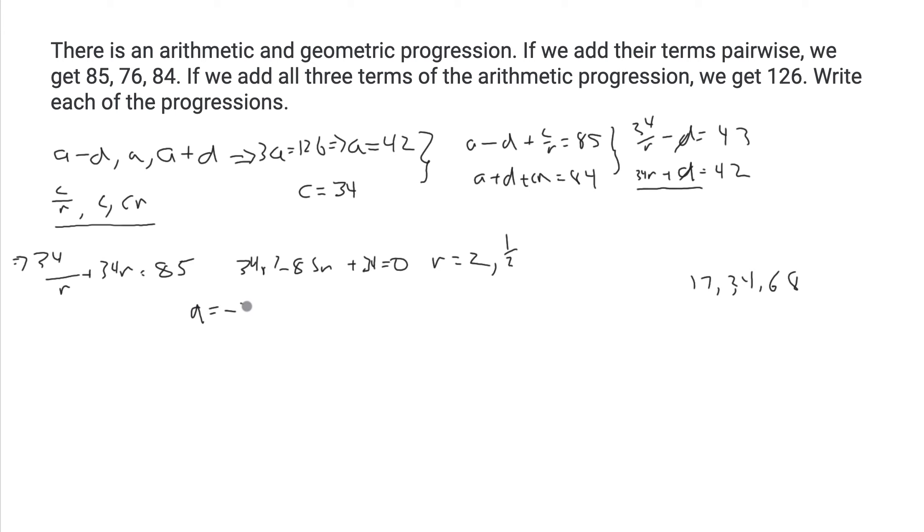That gives us d is minus 26. We can go back and get that our arithmetic sequence is a minus d, which is 42 plus 26, so it should be 68, 42, 16.